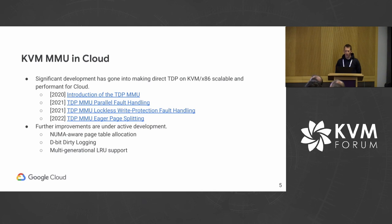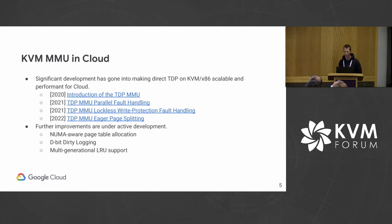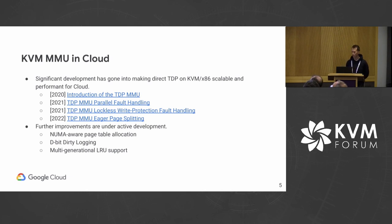A lot of development has gone into making TDP in KVM x86 very scalable and performant for cloud use cases. Some features date back to 2015, some to 2012 in terms of how long we've been using them within Google Cloud. In 2020, we upstreamed an entirely new MMU in KVM x86 called the TDP MMU, focused on just the TDP paging use case — it doesn't do any shadow paging. Within this, we added support for parallel fault handling, so vCPUs could fault and populate non-present entries in the page tables in parallel.